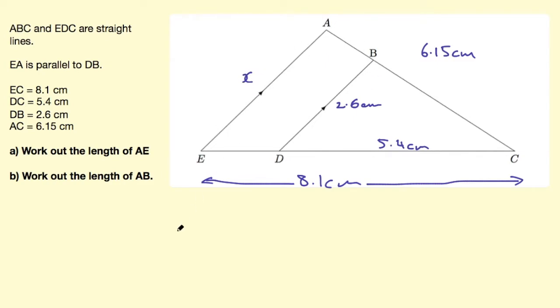So I'm going to call that X for now, just so I know which one I'm looking for. So I'm looking for the length AE. And I know I've got two triangles here. And the first thing I'm going to do is test for similarity. So which test do you think I could use for similarity here?